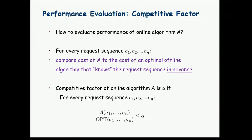The measure is called the competitive factor. We say that an algorithm is alpha-competitive if for every request sequence, the cost of the online algorithm normalized by the cost of an optimal algorithm — which knows the full request sequence in advance — is upper bounded by alpha.